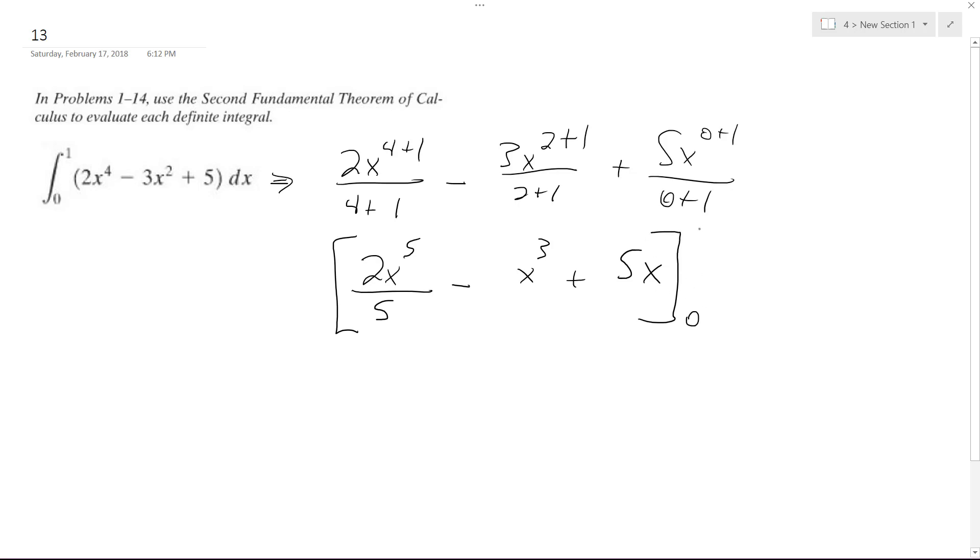So what I end up with is, and this is integrated from 0 to 1, so starting off with 1, I get 2 times 1 raised to the 5th over 5 minus 1 cubed plus 5 times 1 minus,